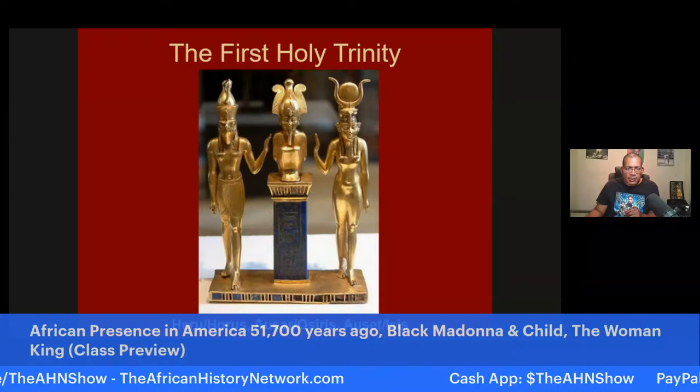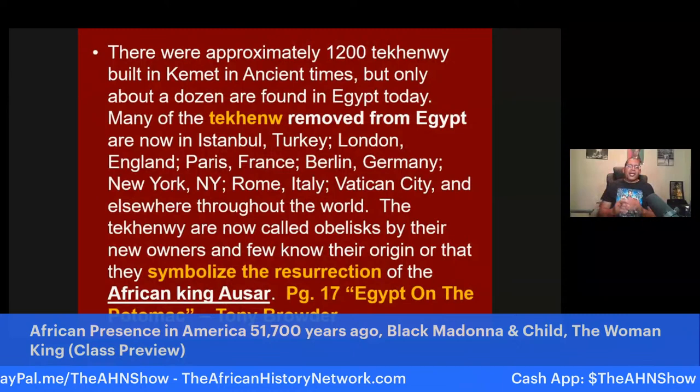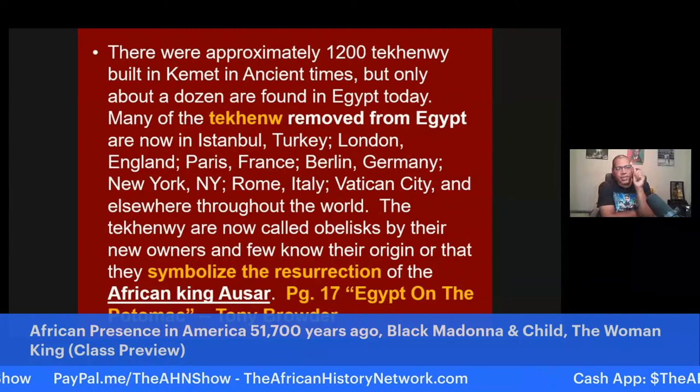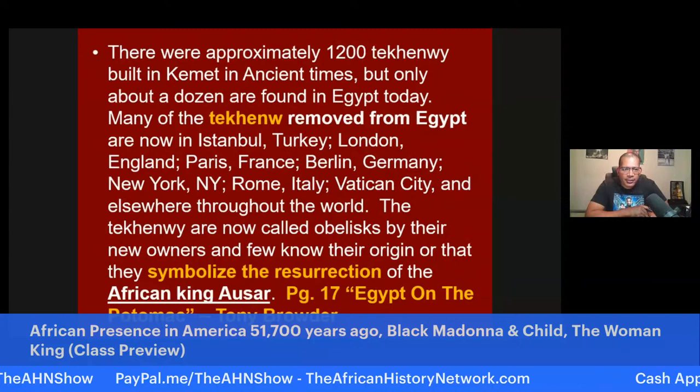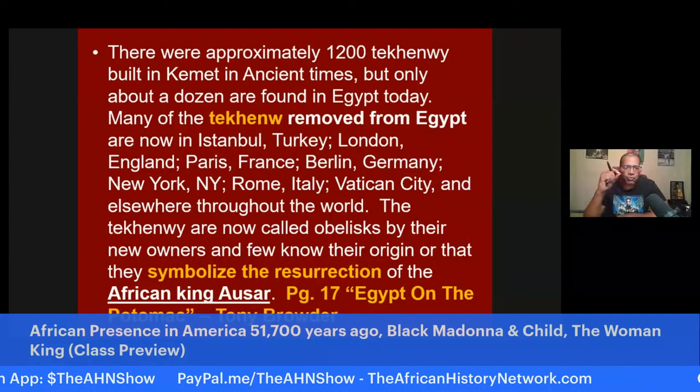There were approximately 1,200 Tekenu built in ancient Kemet, but only about a dozen are found in Egypt today. Many of the Tekenu removed from Egypt are now in Istanbul, Turkey; London, England; Paris, France; Berlin, Germany; New York City; Rome, Italy; Vatican City; and elsewhere throughout the world. The Tekenu are now called obelisks by their new owners, and few know their origin or that they symbolize the resurrection of the African king Asar.